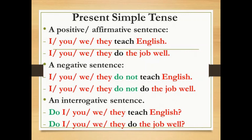The negative and interrogative: don't look for any auxiliary but the auxiliary 'do'. Here we have I, you, we, they — do not — and the main verb 'teach English'. I, you, we, they — the auxiliary 'do' plus 'not' plus the main verb 'do': 'Do not do the job well.'